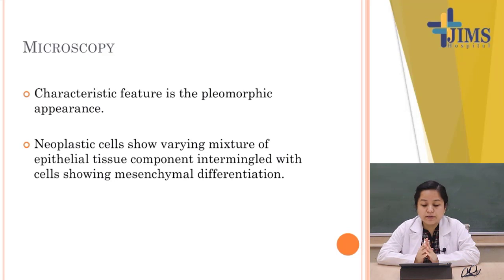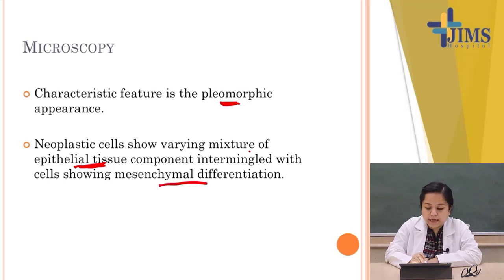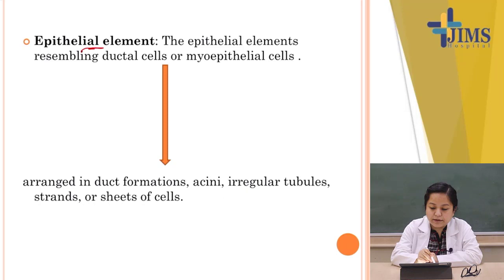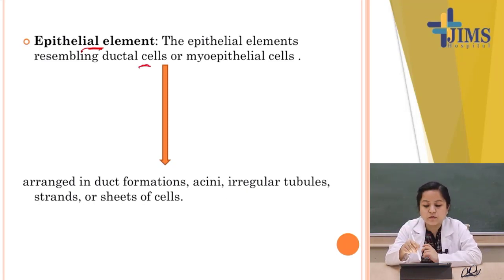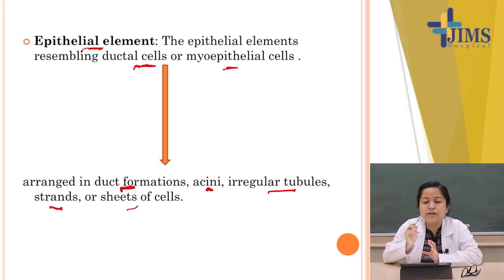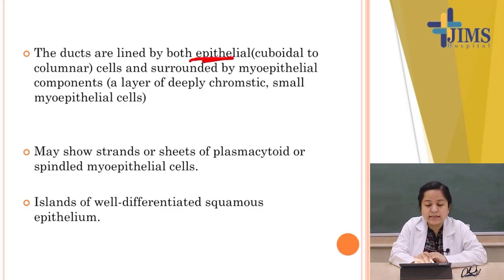Microscopically, the characteristic appearance of pleomorphic adenoma is a pleomorphic pattern: neoplastic cells showing a varying mixture of epithelial tissue and mesenchymal differentiation. The epithelial element resembles ductal or myoepithelial cells and can be arranged in ducts, acini, irregular tubules, strands, or sheets.